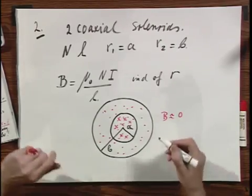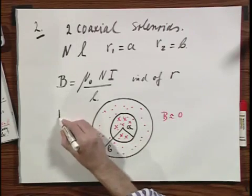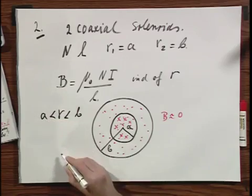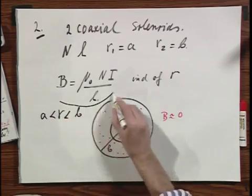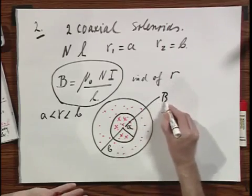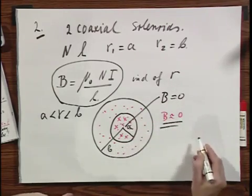So the answer, what the magnetic field is, is quite simple. The magnetic field is only non-zero when R is less than B and larger than A, and that is the value that you see here. And it is B here, B is zero here because the two fields cancel each other, and B is also zero outside.